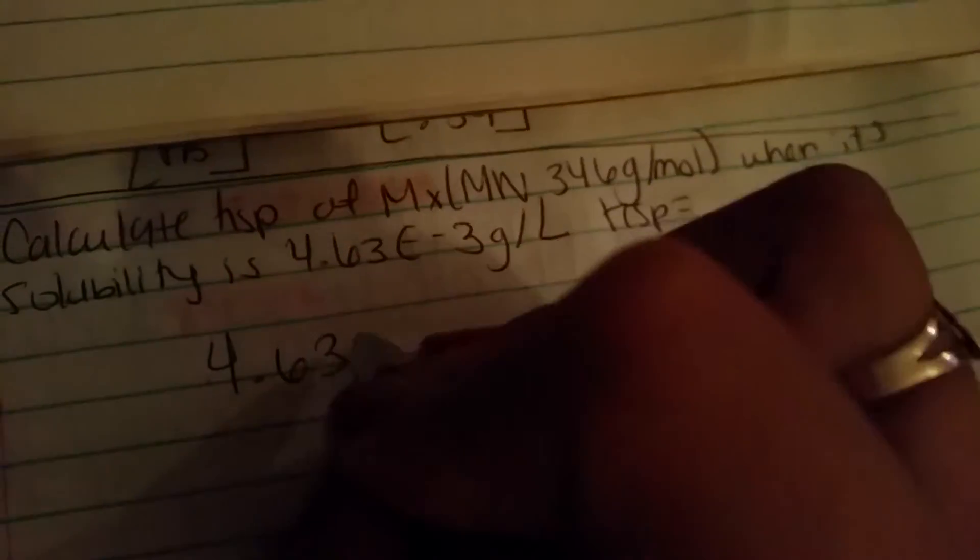KSP is, so what you do here, it's pretty simple. So you have your 4.63 times 10 to the negative 3.